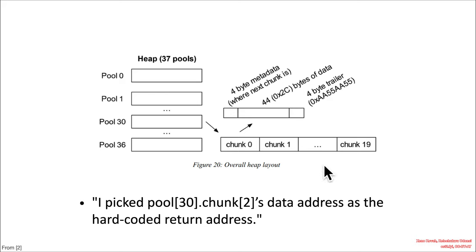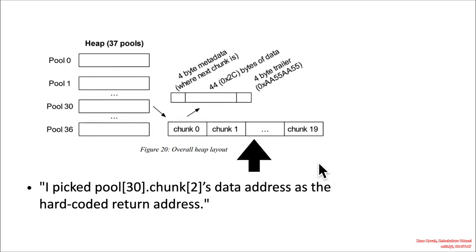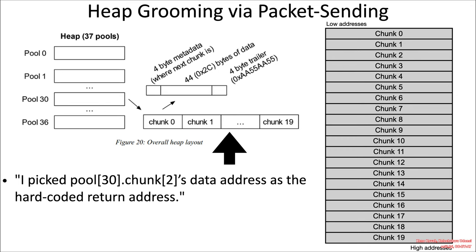Pool 30 chunk 2 is going to have a data address that will work as a hardcoded return address when she ultimately overflows the stack. The important thing is that we're dealing with both heap and stack: packets come in, get stored in these chunks, and then are copied to a stack buffer — and it is the stack buffer that overflows, not the heap buffer. Any given chunk has 4 bytes of metadata, 0x2C maximum bytes of data, and 4 bytes of trailer. Chunk 2 is where the hardcoded return address for the stack overflow is placed.